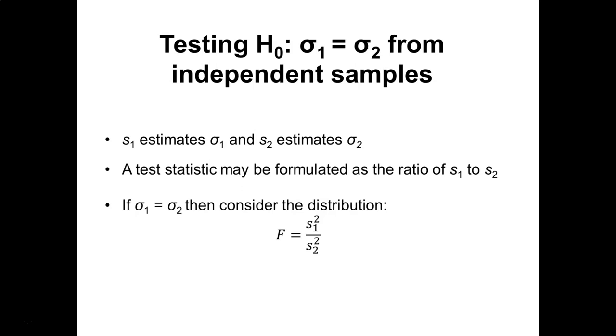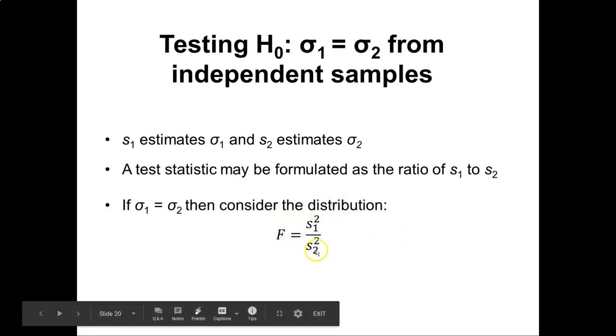Here again we can say that S sub 1 estimates sigma 1, or estimates the population standard deviation. S sub 2, the sample standard deviation, estimates the population standard deviation. We can calculate a test statistic by simply taking the ratio of S1 to S2. If the two population variances are equal then this ratio should equal about 1.